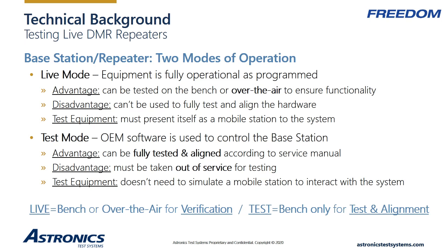This presentation focuses on Tier 2 and Tier 3 systems since they use infrastructure to provide communication services. The base station or repeater can operate in one of two modes: live mode or test mode. Each mode must be tested differently and serves a different purpose. Live mode means the base station is operating as a repeater — it is listening for a DMR signal at the receiver frequency and sending that signal back out at the transmitter frequency. If there is no received signal for a period of time, the transmitter stops sending out a signal. Once the system is in sleep mode, the received signal must include a wake-up sequence to re-enable the transmitter, and so the test equipment must be able to generate this wake-up sequence.